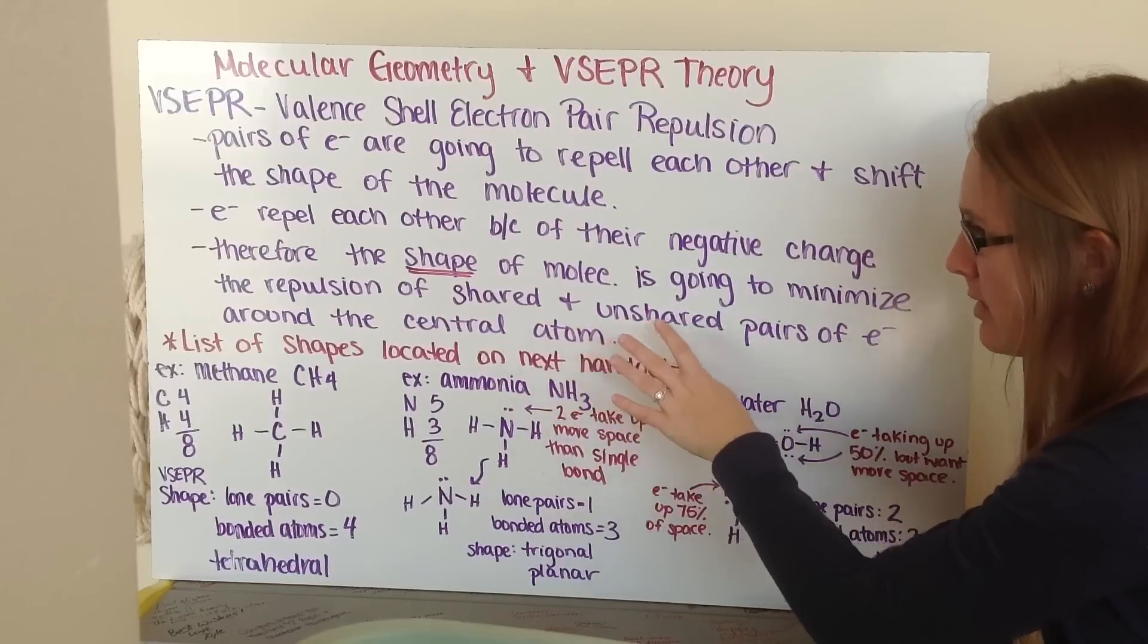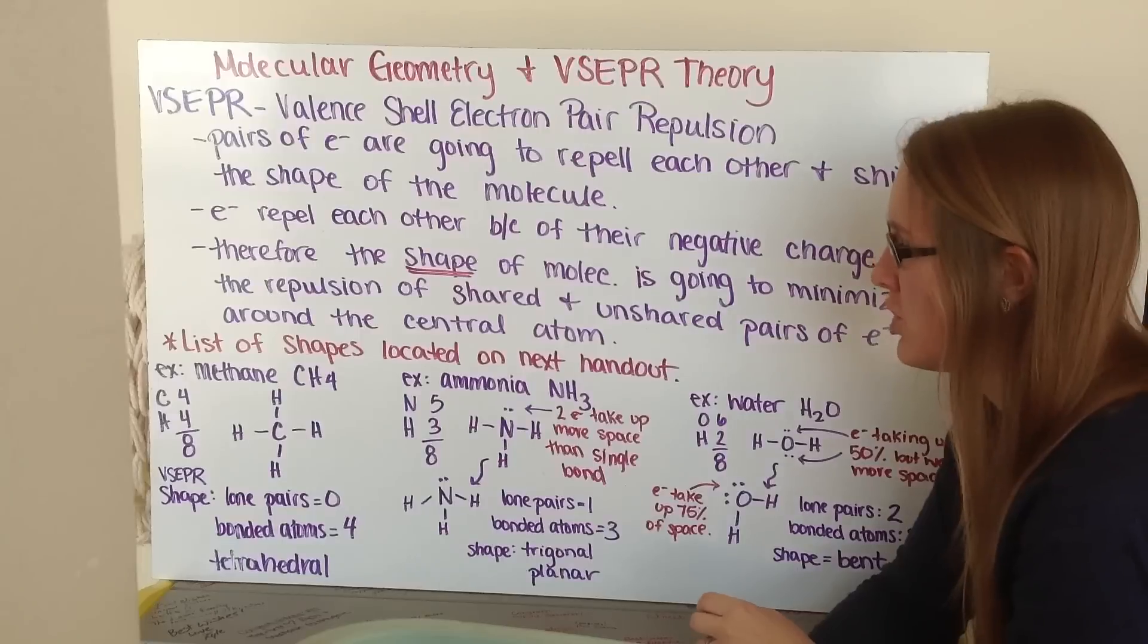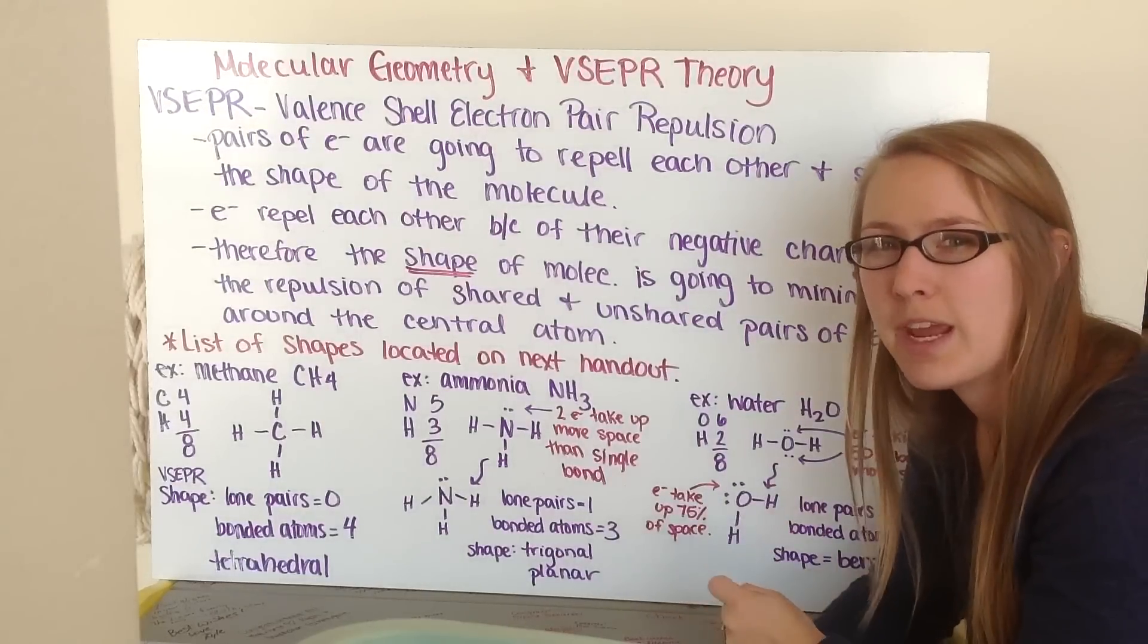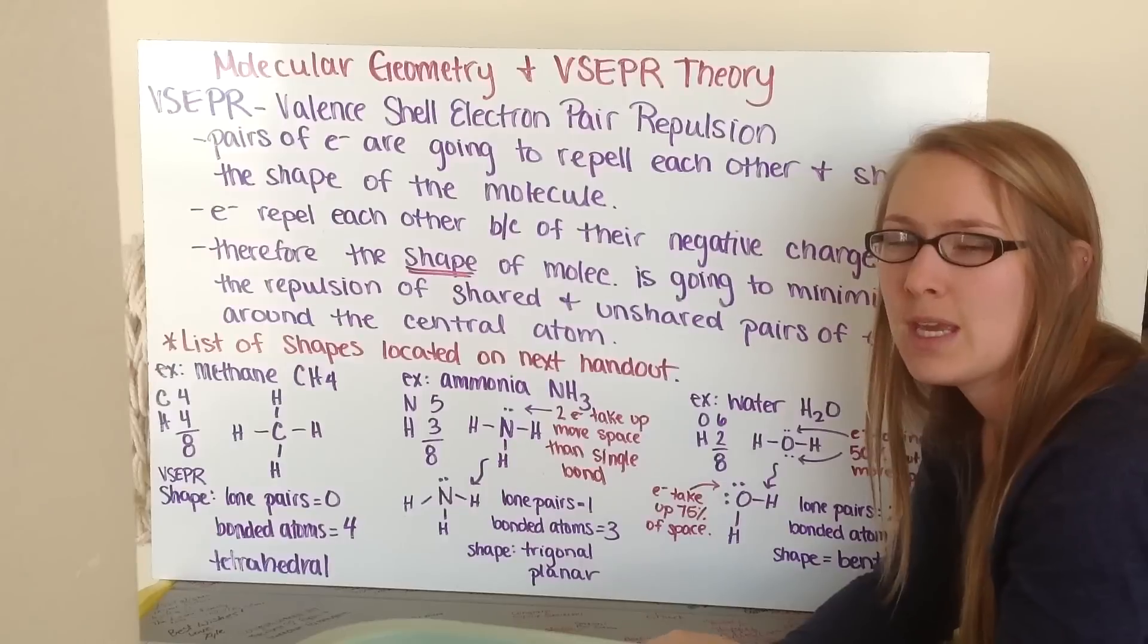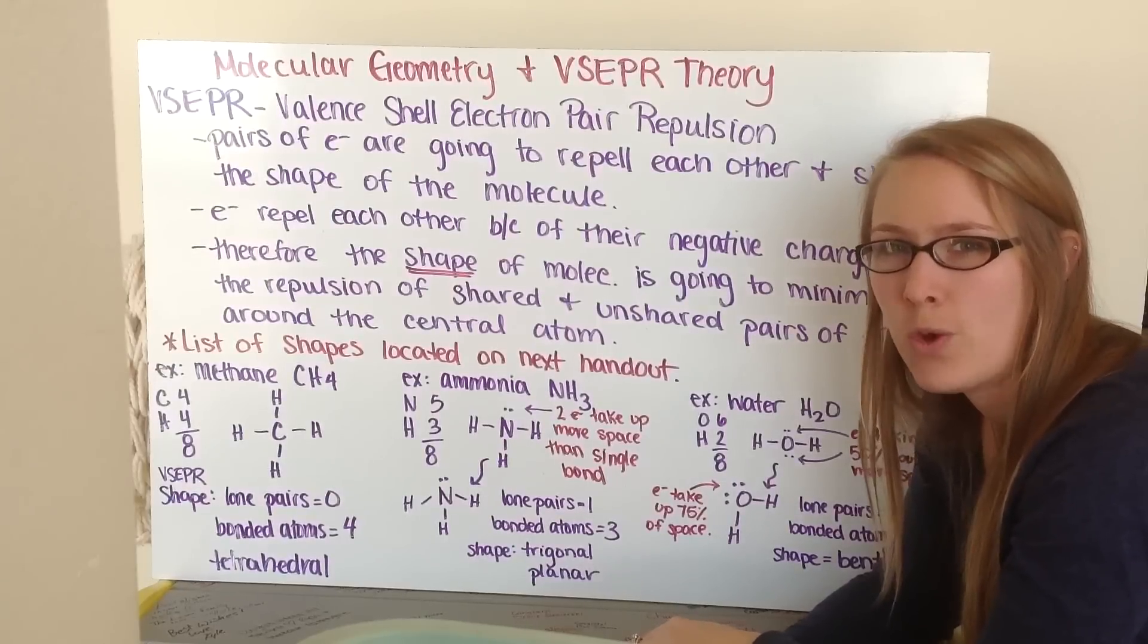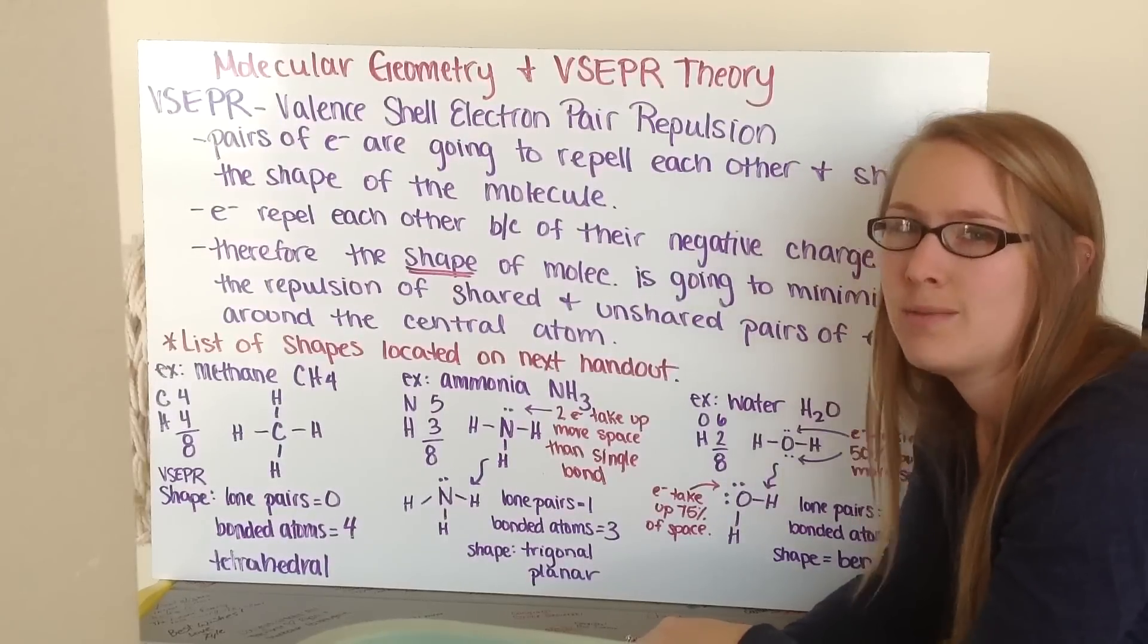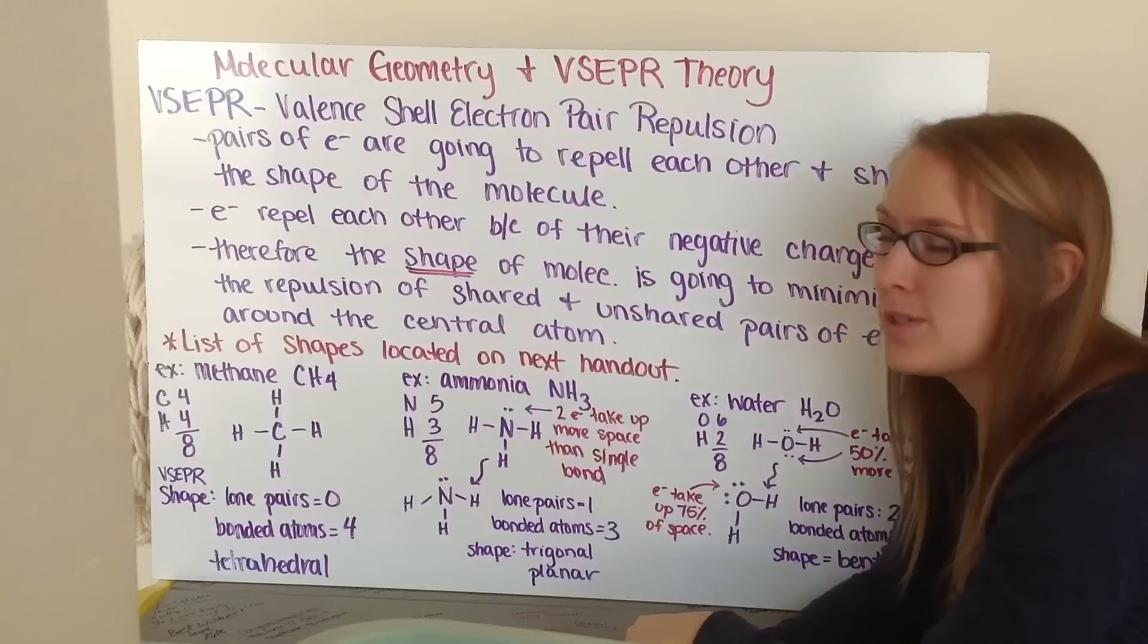Therefore, our shape of our molecule is going to minimize the repulsion of shared and unshared pairs of electrons around the central atom. There's a list of shapes located on the next page of your note packet handouts. You're going to want to refer to that, specifically the lines that list the number of lone pairs and the number of bonded atoms to the central atom to determine the shape.